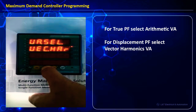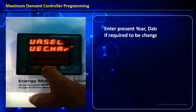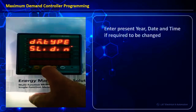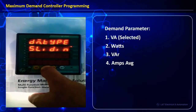Using the VA selection method: for vector harmonics we will be able to see power factor as displacement power factor, and if we select automatic VA then we will see power factor as true power factor. We can program date, time, and year based on requirements. We also have demand type as sliding window or block method, and depending upon the type of demand used in the EB meter, we can select the sliding method or block method.